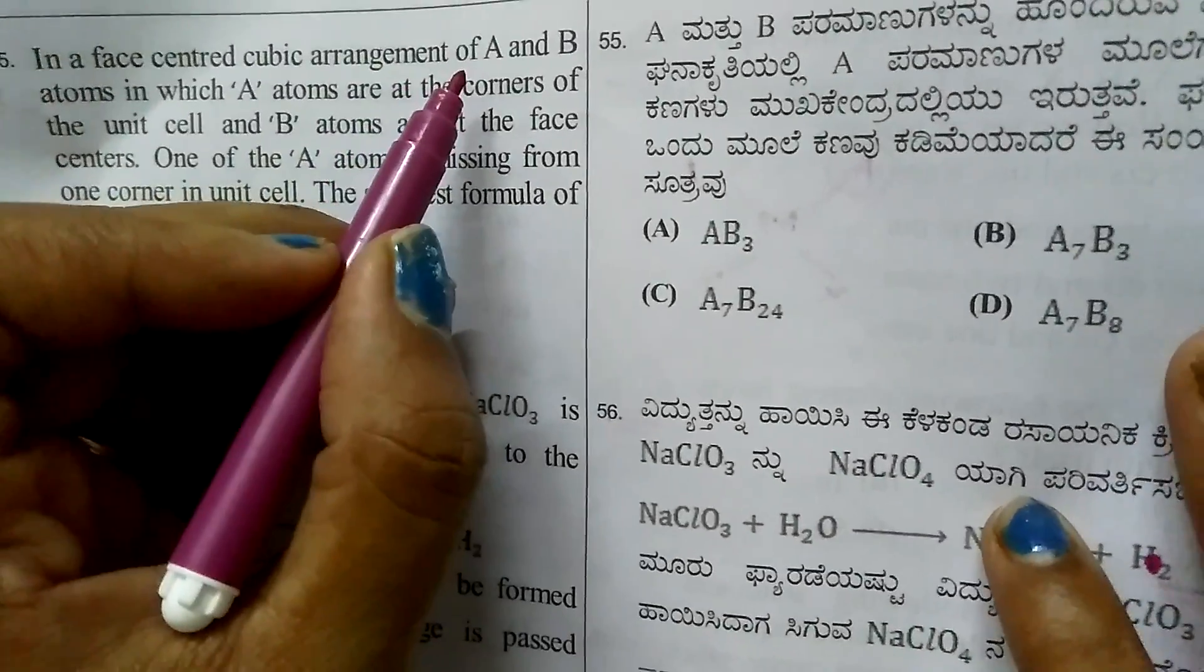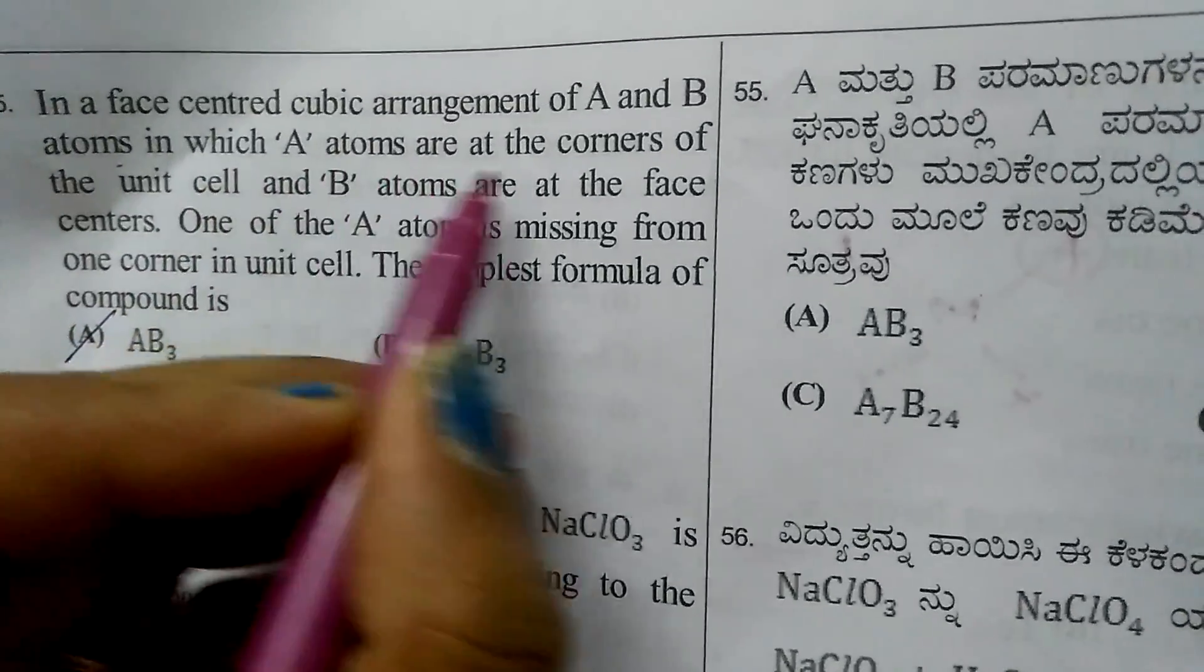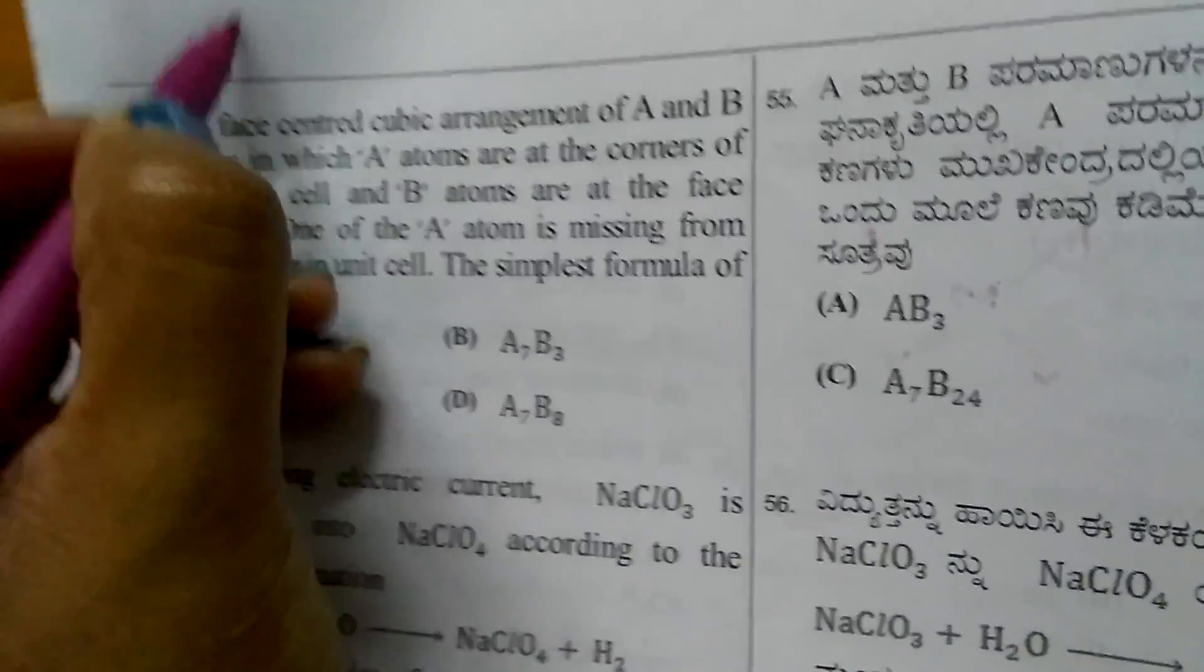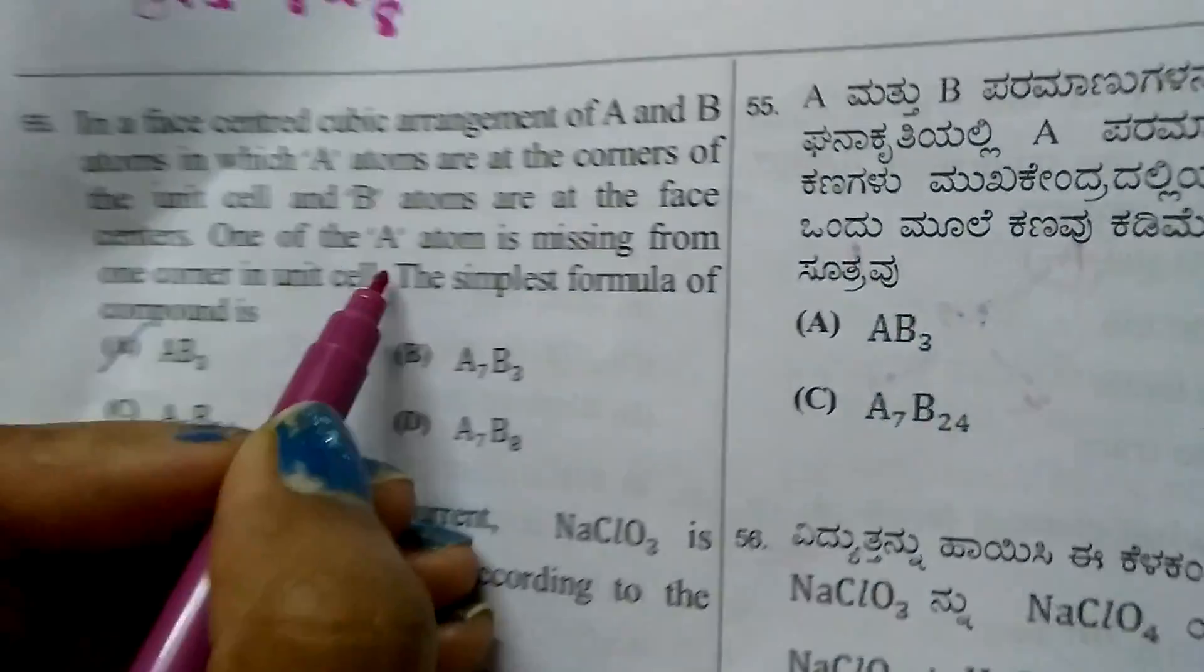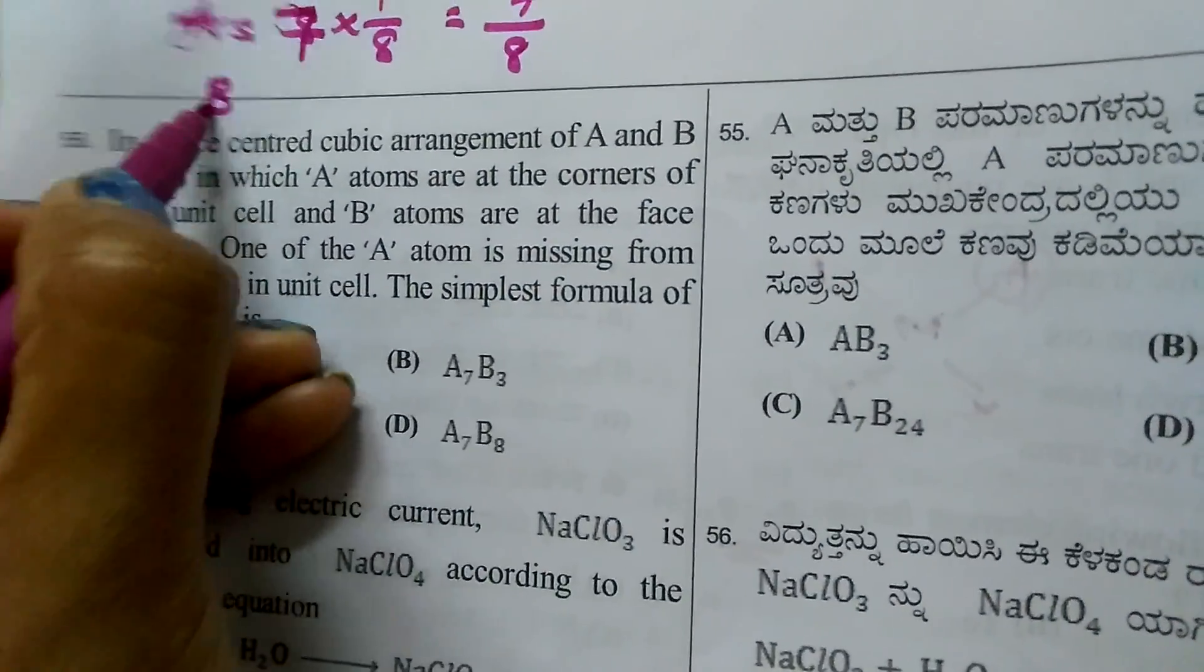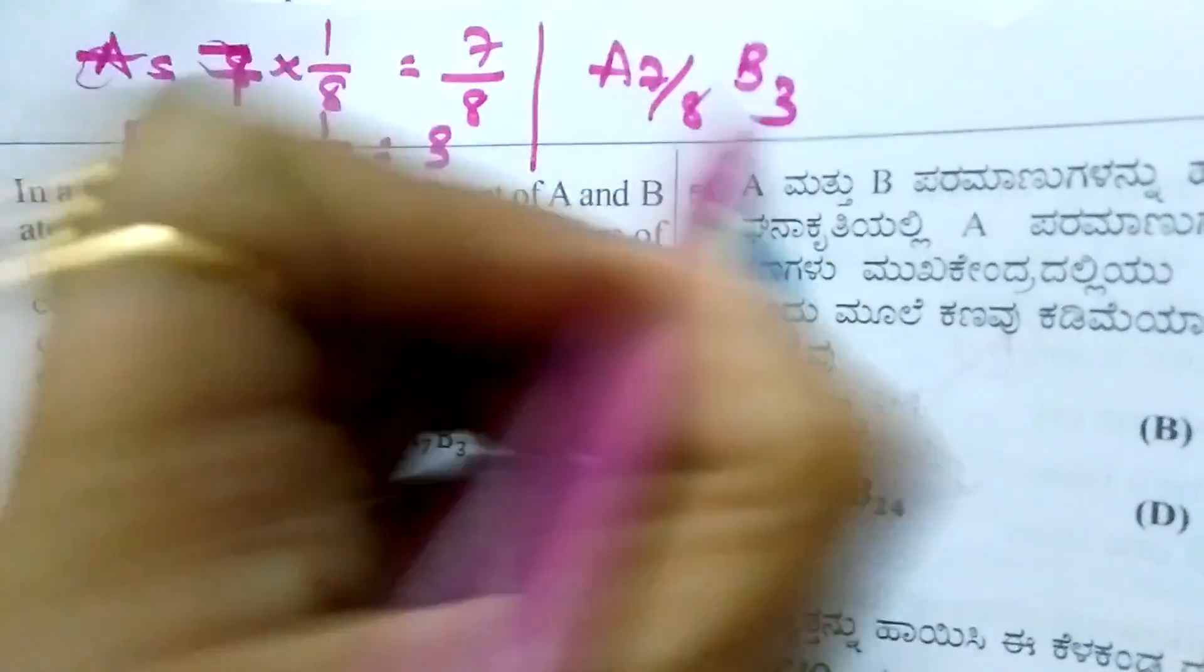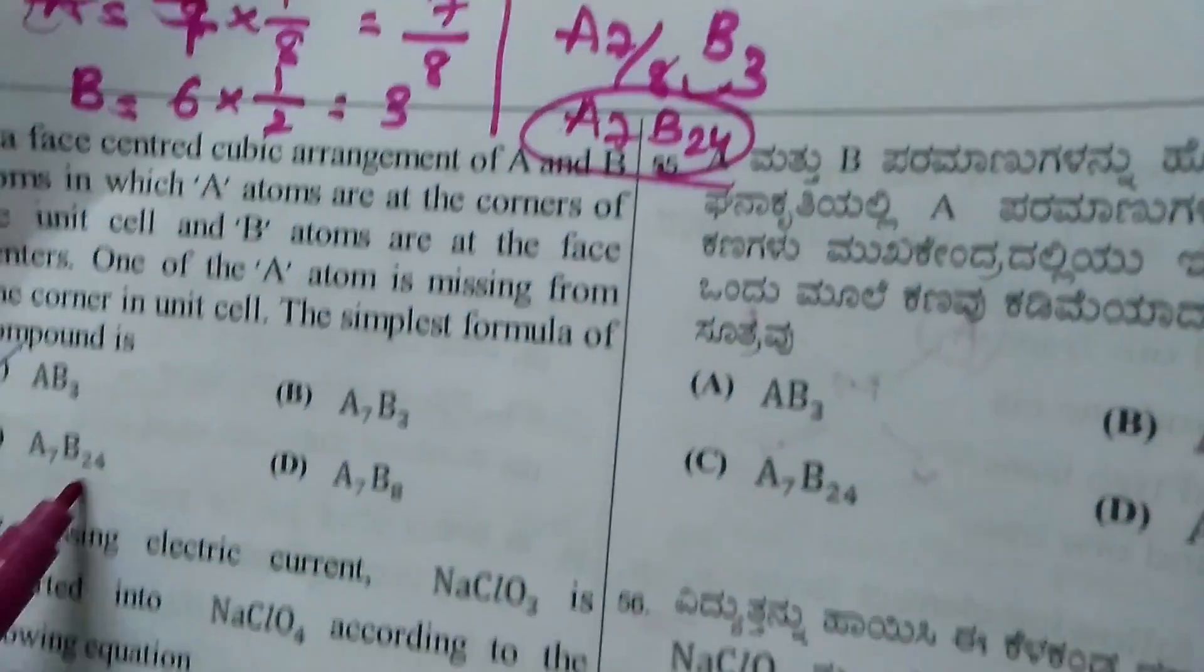Question 54: Face-centered cubic arrangement of A and B atoms. A atoms at corners, B at face centers. One A atom missing from a corner. A atoms: 8 corners minus 1 = 7, contribution 7/8. B atoms: 6 faces × 1/2 = 3. Ratio A:B = 7/8:3 = 7:24. Formula is A7B24.